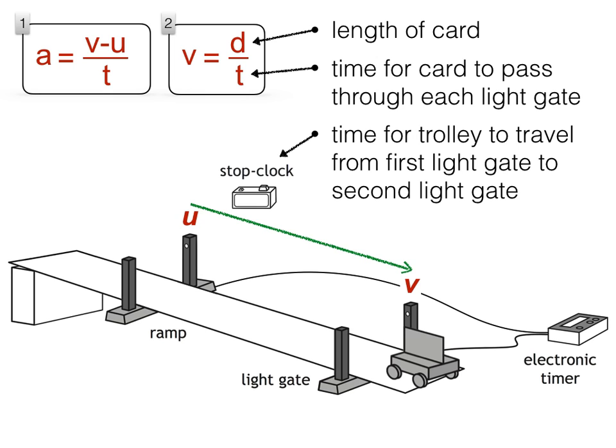And the final velocity of the trolley, V, is calculated by dividing the length of the card by the time it takes to pass through the second light gate. The stop clock is now used to measure the time for the trolley to travel from the first light gate to the second light gate.